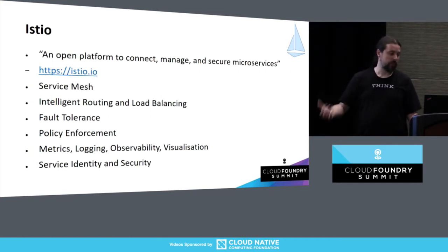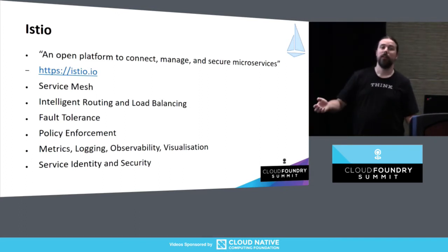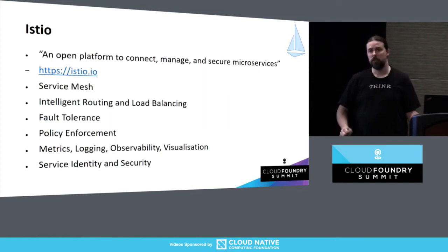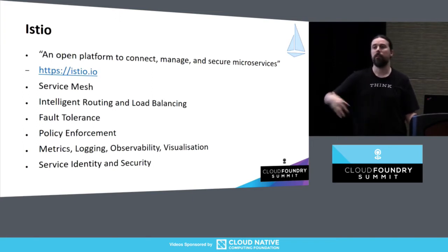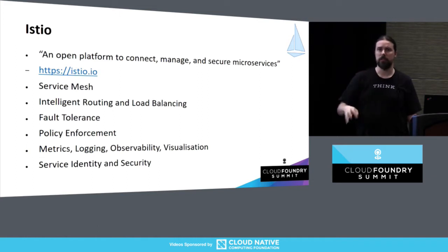Then we get things like metrics, logging, observability, and visualization, which all come for free because by this point Istio is deeply embedded in your mesh and can see all the traffic happening. Lastly, there's service identity and security — because Istio is that far down in your stack, it has a concept of the identity of your services. Instead of security that says this user is allowed to do this thing, you can have the concept that this service is allowed to do this with this other service.